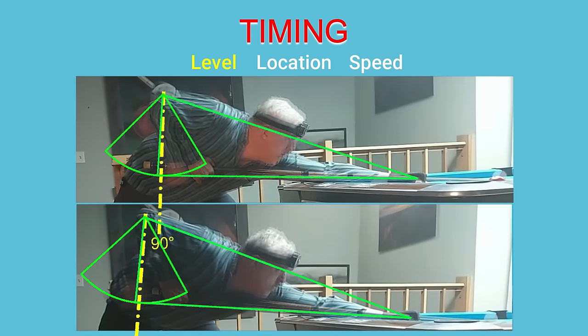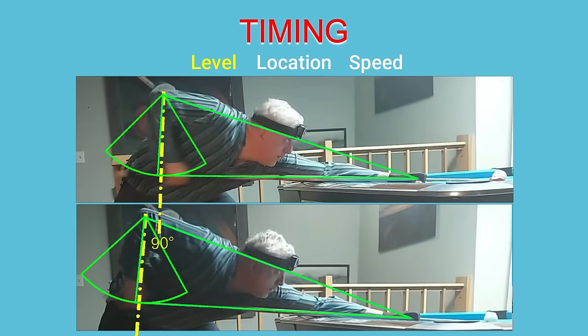Compare the moment before cue ball impact. On top, my grip hand is already rising, while on the bottom, the grip hand will still be very close to level at cue ball impact.